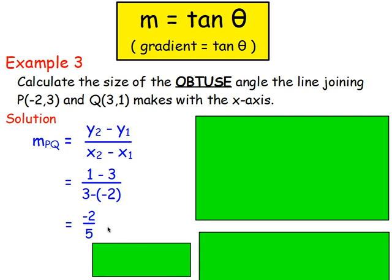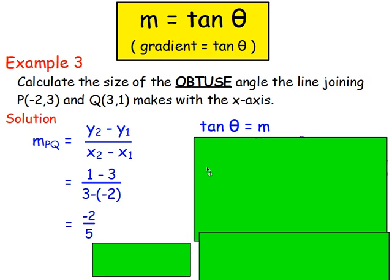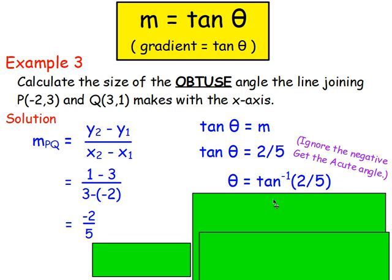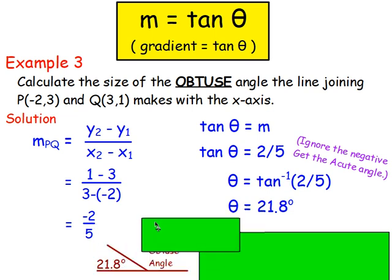We know the gradient, so we can work out the angle. When the gradient is negative, ignore the negative and work out the size of the acute angle first — just as we did with CAST. So TAN⁻¹ of 2 fifths gives 21.8 degrees. Because the gradient is negative, the line slopes down from left to right, so that 21.8 degrees is the acute angle between the line and the x-axis.